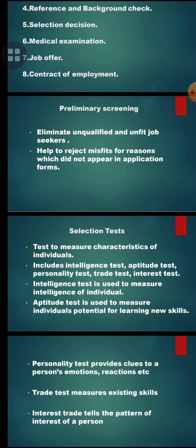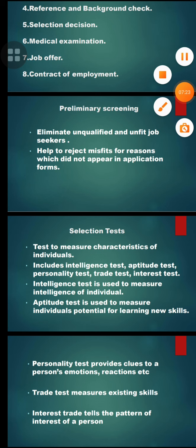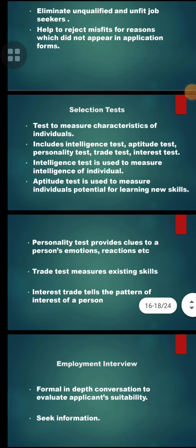The second one is the aptitude test — it is used to measure an individual's potential for learning new skills. The third one is the personality test — it provides clues to a person's emotions, reactions, etc. The fourth one is the trait test — it measures existing skills. And the fifth one, the interest test, tells the pattern of interest of a person.